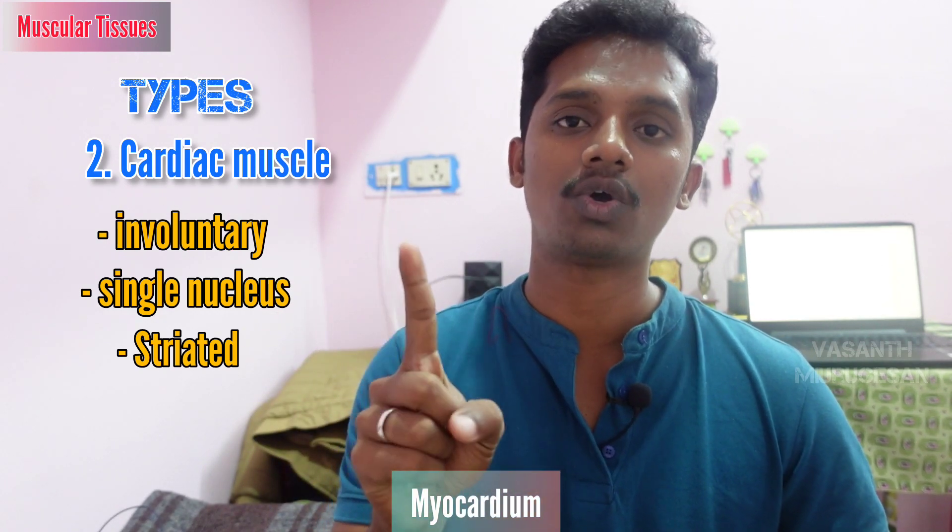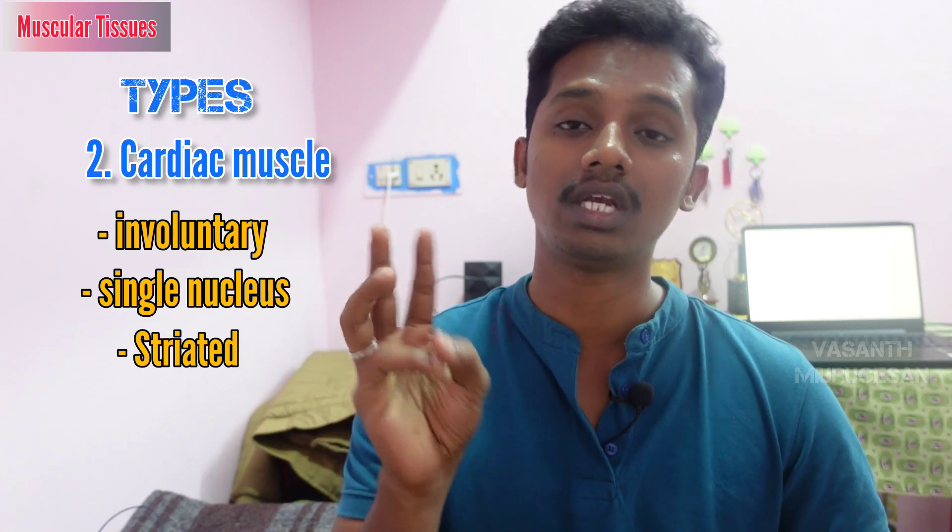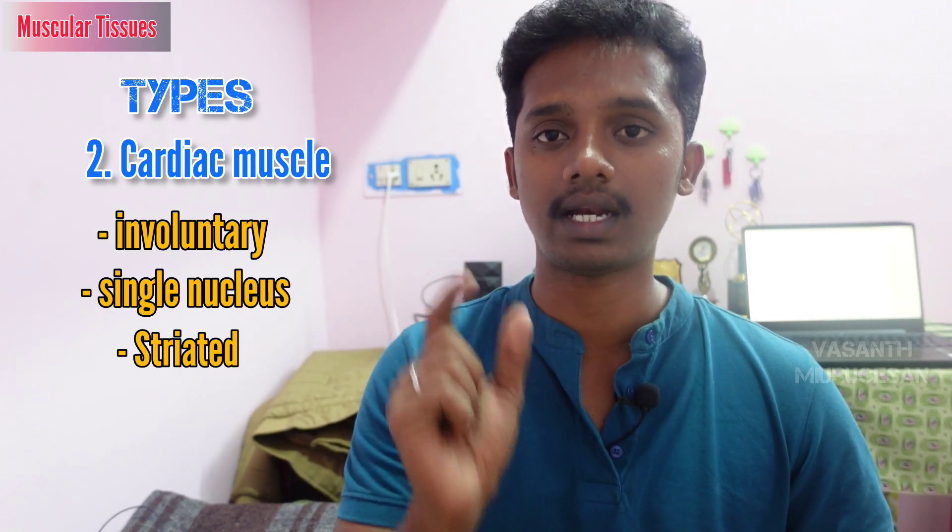When there is a large demand for blood or oxygen in the body, the heart muscles contract strongly to pump more blood. The cardiac muscle has a special name — it is called the myocardium. The heart has three layers: the endocardium, the epicardium, and the myocardium, which is the central layer. The cardiac muscle is totally present in the myocardium layer.